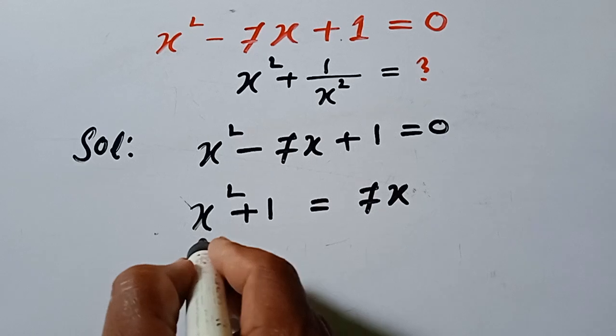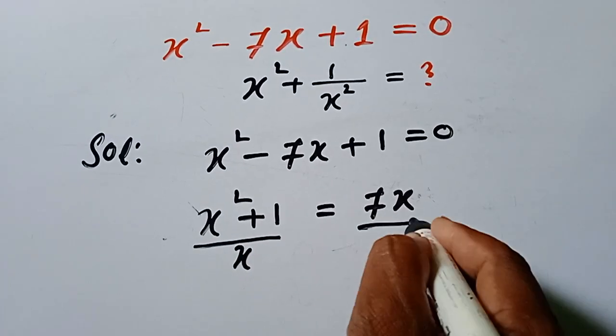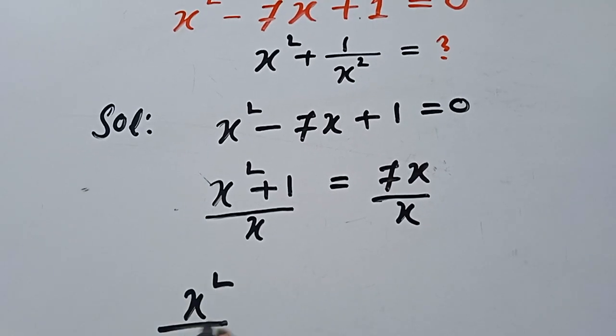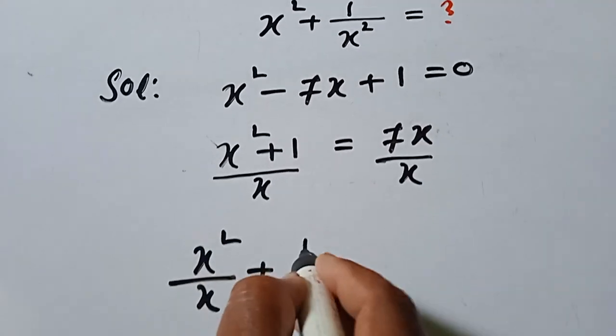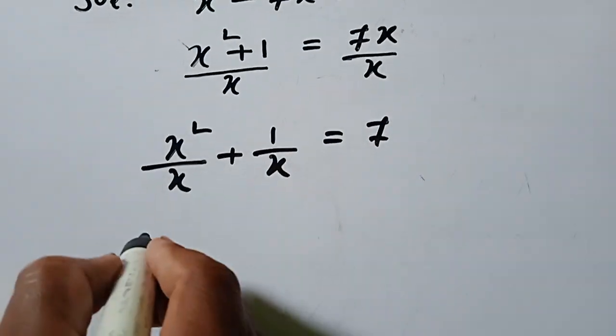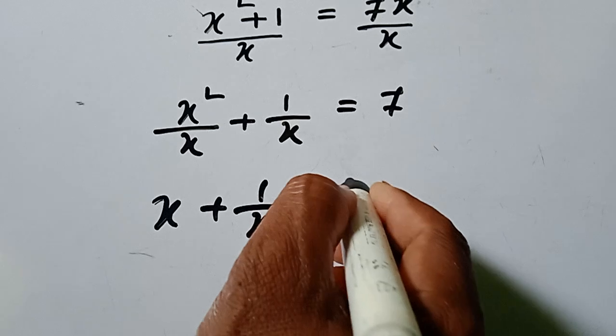Now we divide by x on both sides. So x square over x plus 1 over x is equal to 7. Here x plus 1 over x is equal to 7.